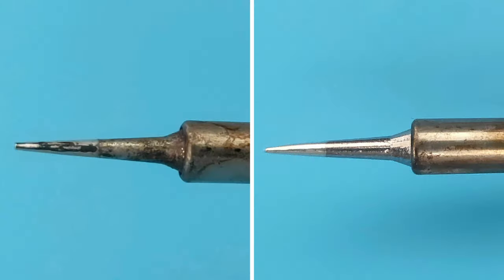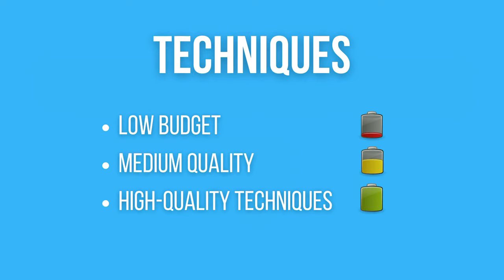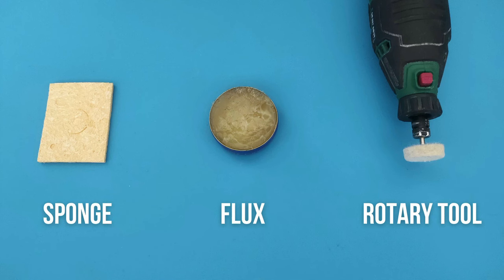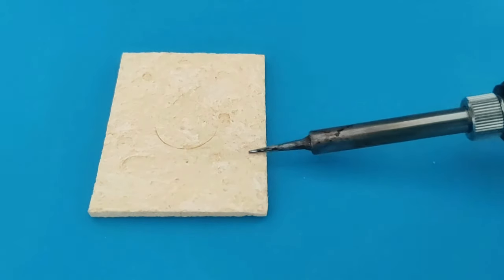How to clean a soldering iron from this to this. There are three techniques: low budget, medium quality, and high quality. I'm going to use a sponge, flux, and rotary tool. This is the cheapest and worst way.